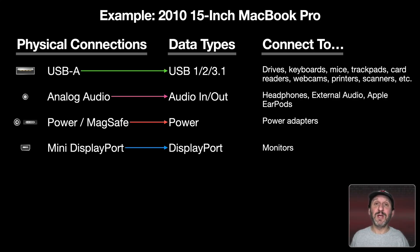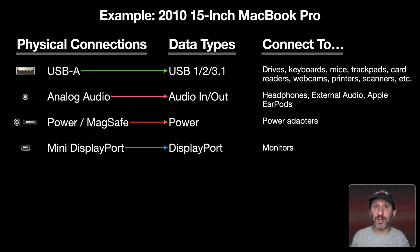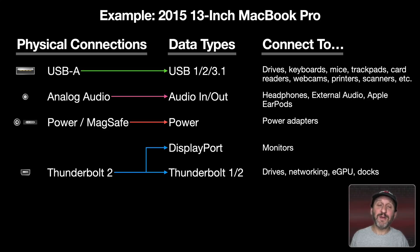Let's look at some examples. Going back ten years to a 2010 15-inch MacBook Pro: it had USB-A ports, an analog headphone port, a dedicated power port, and a Mini DisplayPort — which looks like Thunderbolt 1 or 2 but is not. It can only connect a screen using Mini DisplayPort. Moving forward five years, we still have USB-A ports, analog audio, and a dedicated power port, but now instead of a Mini DisplayPort there's a Thunderbolt 2 port. Even though it looks the same, this port can also speak DisplayPort, Thunderbolt 1, and Thunderbolt 2 — making it much more useful.